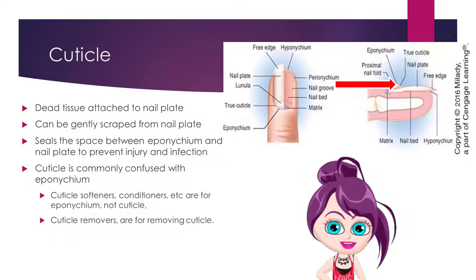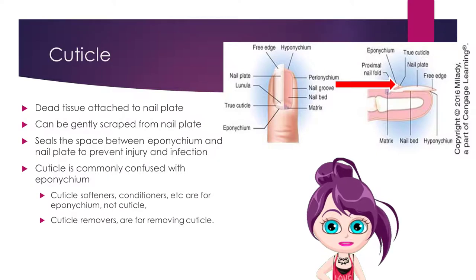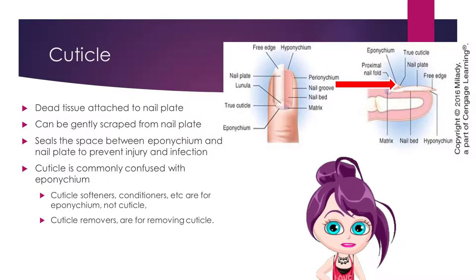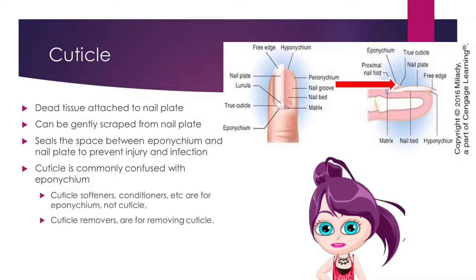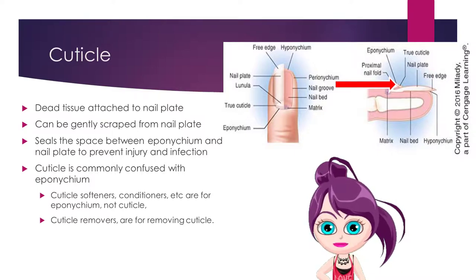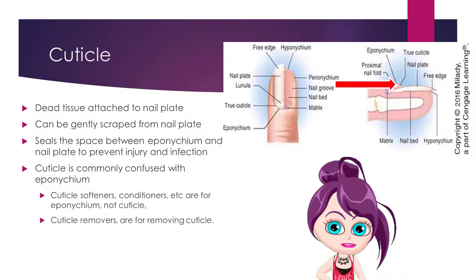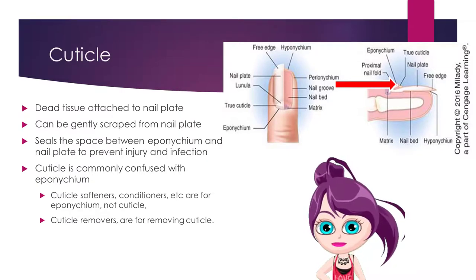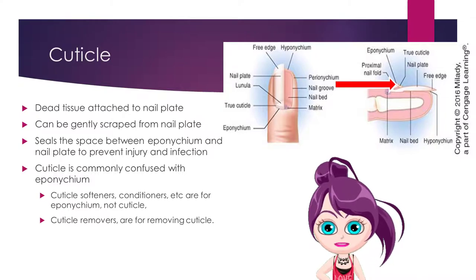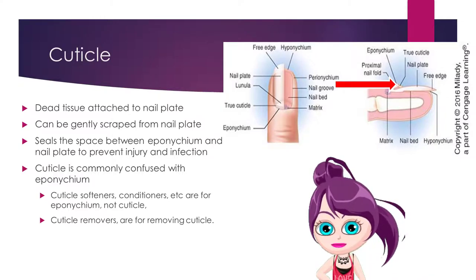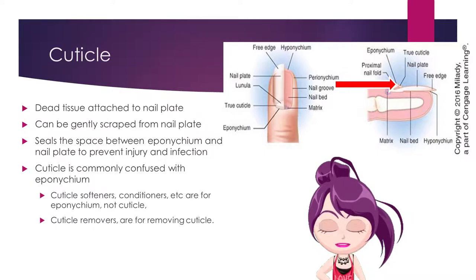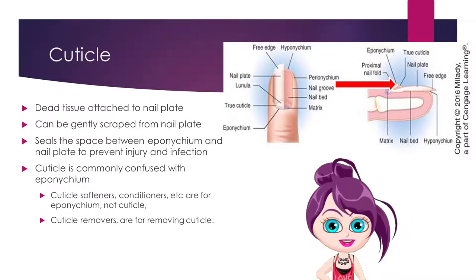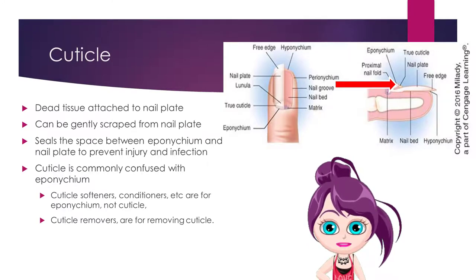The cuticle is the dead tissue that attaches to the nail plate and can be gently scraped from it. The cuticle helps seal the space between the eponychium and the nail plate to prevent injury and infection. The cuticle is commonly confused with the eponychium. Cuticle softeners and conditioners are meant to be used for the eponychium, not the cuticle. Cuticle removers are for removing cuticle — dead tissue.